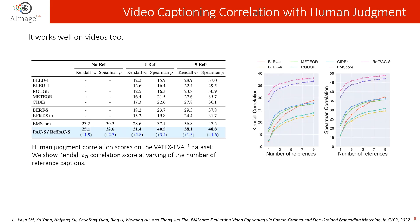Our approach not only outperforms existing metrics in terms of correlation with human judgment for image captioning, but also for videos, both in a reference-free and reference-based setting. To evaluate the correlation with humans in the context of video caption pairs, we consider the VATX-EVAL dataset. On the right, we also report the correlation scores at varying numbers of reference captions. It can be seen that PACScore achieves the best correlation scores in all settings.